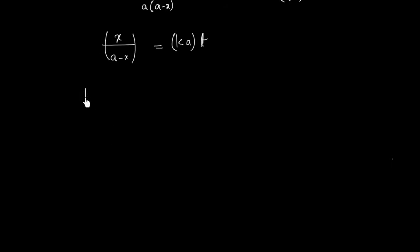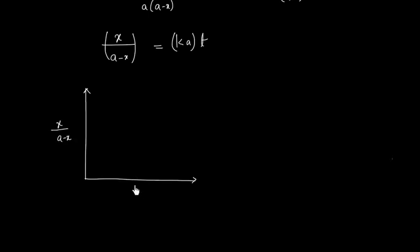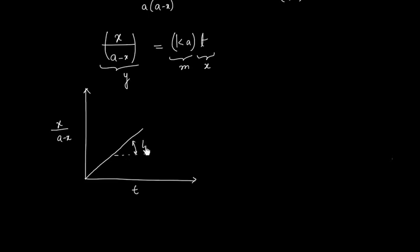We can plot a graph of x/(A minus x) versus time. Here x/(A minus x) is y, time is x, and this gives a straight line passing through the origin. The slope tan θ equals k times A.